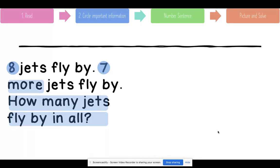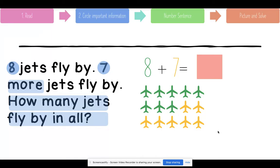What is your number sentence going to look like now? Eight plus seven equals blank. Good. Eight is the number you started with. Seven is your change, and we are looking for the sum. Now we can draw our picture. We started with eight jets first and then we added seven jets.